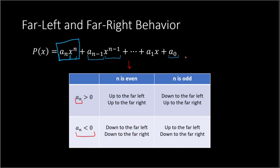Now if n is odd — say we have something to the 3rd power, 5th power, or 7th power, etc. — what we know is that the far left and the far right are doing opposite things. If the coefficient is positive, the far left is going down and the far right is going up. Whereas if the leading coefficient is negative, it is going up to the far left and then down to the far right. We can use this table to figure out the far left and far right behavior of any graph.